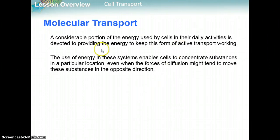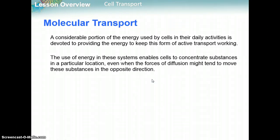A considerable portion of energy used by cells in their daily activities is devoted to keeping this form of active transport working. The use of energy enables cells to concentrate substances in a particular location even when diffusion might tend to move those substances in the opposite direction. It's like trying to walk through a crowded hallway against a big crowd going the other way — it takes a lot of energy. Moving things from low to high concentration takes a lot of energy because that's not how things naturally flow.